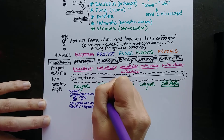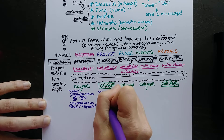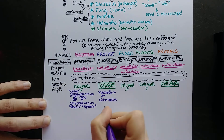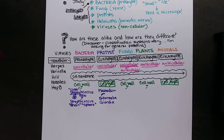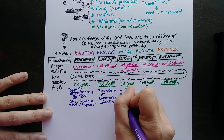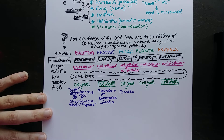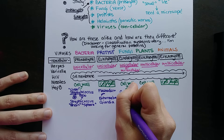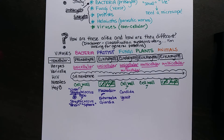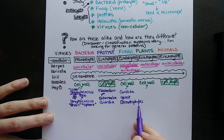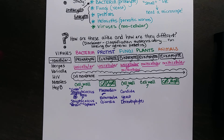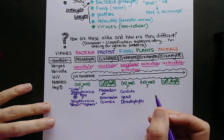For protists: Plasmodium causes malaria; Entamoeba can cause a terrible dysentery — a severe diarrhea; and Giardia is another protist found in the temperate northwest, causing diarrhea and living in cool-water creeks where animals have defecated. For fungi: Candida albicans causes thrush and various yeast infections, and dermatophytes are fungi that grow on the skin, sometimes causing hair loss.